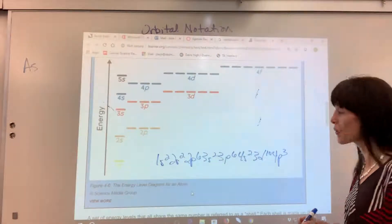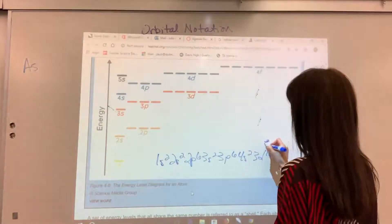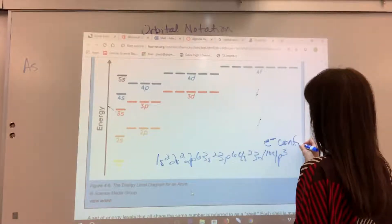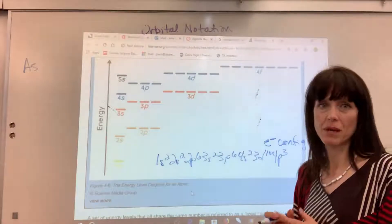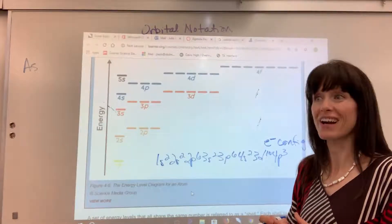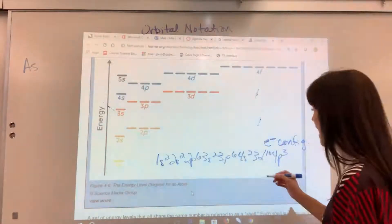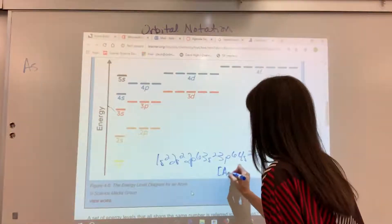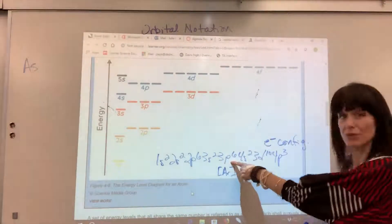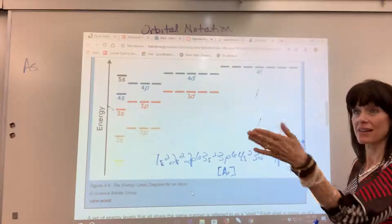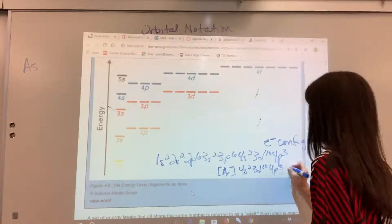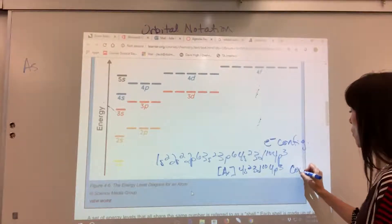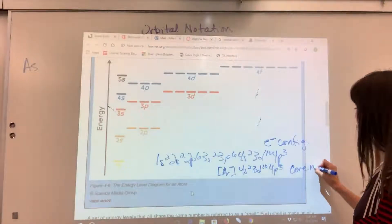We've got 1s2, 2s2, 2p6, 3s2, 3p6, 4s2, 3d10, 4p3. And follow that with your periodic table. Grab it and you'll see that this is the electron configuration for arsenic. Remember if we were doing a core notation. So let me write this down. That's electron configuration. Core notation. That's going to be our shortcut. I go back to the last noble gas, which is argon. That's equivalent to 3p6. And then I write the rest of the electron configuration, 4s2, 3d10, 4p3.